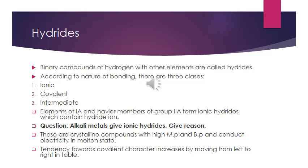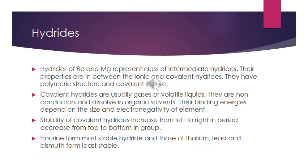Just like halides, in hydrides when we move left to right in a period, the bonding character shifts towards covalent character. Beryllium and magnesium belong to the intermediate class — their properties are intermediate between ionic and covalent hydrides. They have a polymeric structure and their nature is covalent. Covalent hydrides have weak van der Waals forces of attraction, so they are usually gases, volatile liquids, or non-conductors, and dissolve in organic solvents. Their bond energies depend on the size and electronegativity of the elements.